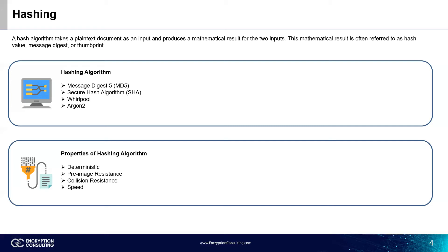Next we have Whirlpool, which is a hash designed after the square block cipher. It takes a message of any length less than 2 to the power of 256 bits and returns a 512-bit message digest. The last is Argon2, which is a cryptographic hash algorithm specifically designed to secure passwords.